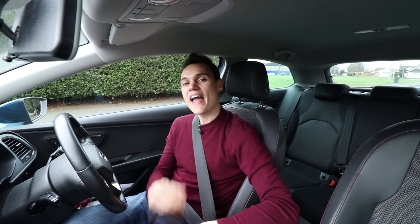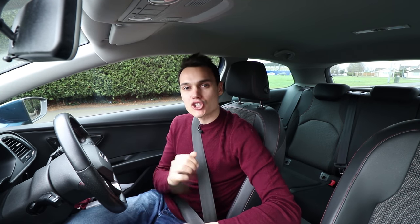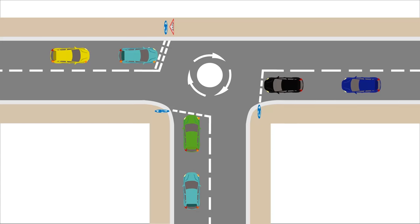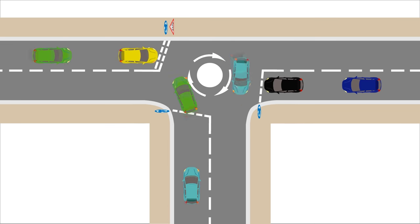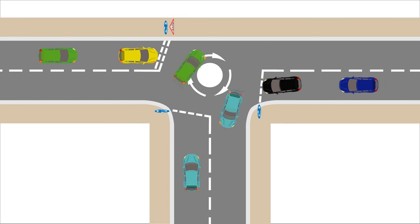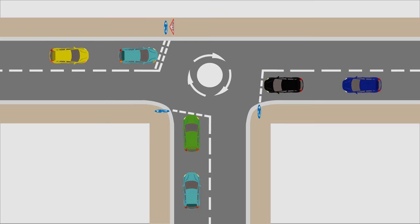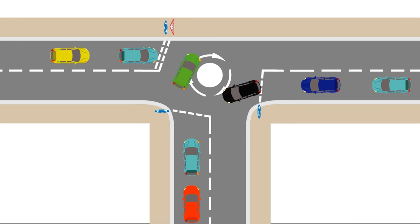Sometimes at mini roundabouts you can get what's known as a Mexican standoff, where everybody's giving way to everybody. Here is an example: the green car is waiting for the black car, the black car is waiting for the blue, and the blue is waiting for the green. Therefore, no one has priority. A good etiquette is to let the person waiting the longest go first, which will then create a shield allowing another car to go and getting the mini roundabout moving once again. If no one is moving, don't be afraid to start first — just make sure you start slowly to warn the others.